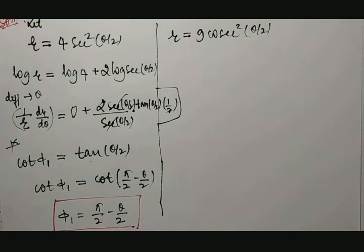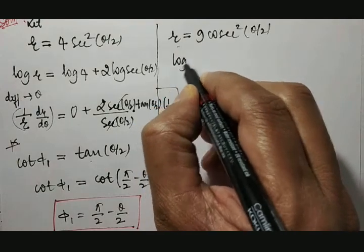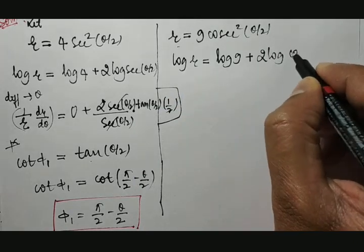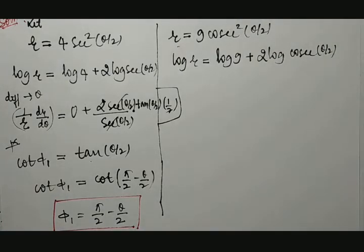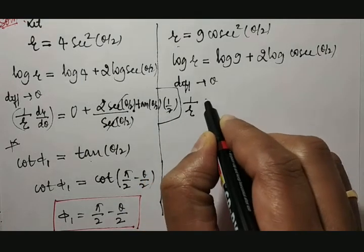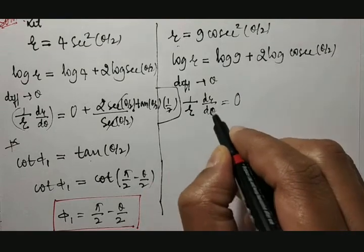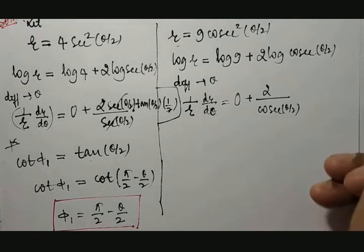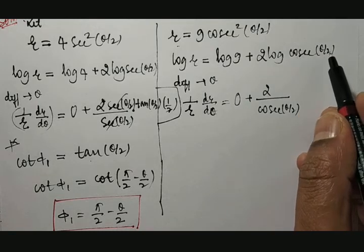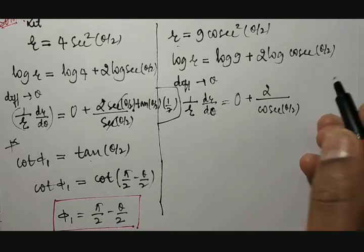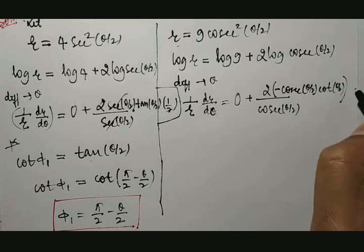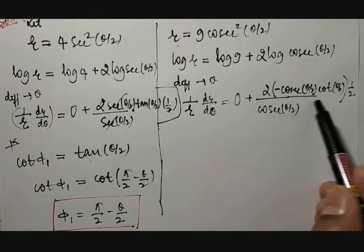Now I will move to the next angle, φ₂. Same approach — apply log on both sides: log r = log 9 + 2 · log(cosec(θ/2)). Differentiating with respect to θ: (1/r)(dr/dθ) = 0 + (2/cosec(θ/2)) · (−cosec(θ/2) · cot(θ/2)) · (1/2), because the differentiation of θ/2 is 1/2.